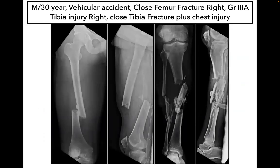This patient had a vehicle accident — high velocity trauma. He had a closed fracture of the right shaft femur with ipsilateral comminuted, severely comminuted fracture of the middle third tibia. He also had a closed tibia fracture on the left side.